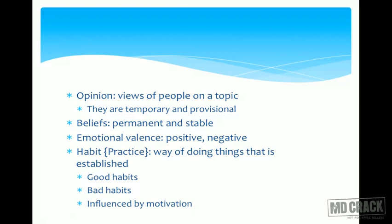Emotional valence is the inherent quality of something to evoke an emotional response — it may be positive or negative. A notable example is the positive emotional valence of babies: the human brain has been programmed to feel babies as cute, and if we did not feel so, we would not care for them. Habit, also called practice, is a way of doing things. Habits can be good or bad and are influenced by motivation, whereas attitudes are not influenced by motivation.